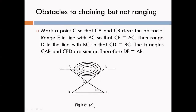Next, obstacles to chaining but not ranging — meaning chaining is not possible on the ground. This method gives the length of line AB. Consider two points A and B on the ground. A is our starting point, B is our ending point, and AB is our survey line. In between A and B there are some obstacles; for example, a pond is here, so chaining is not possible.